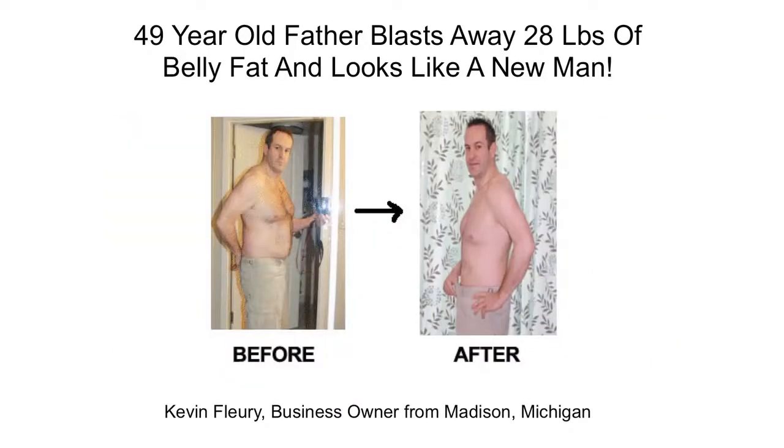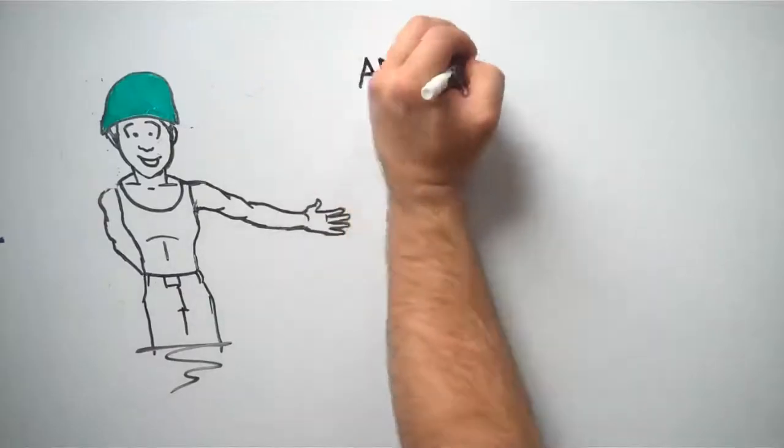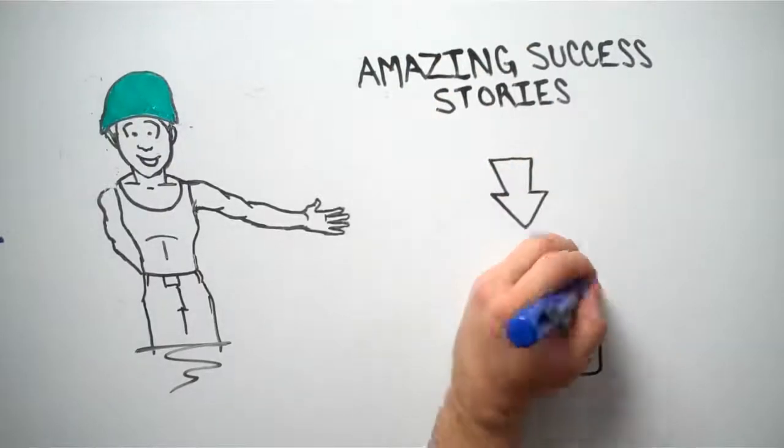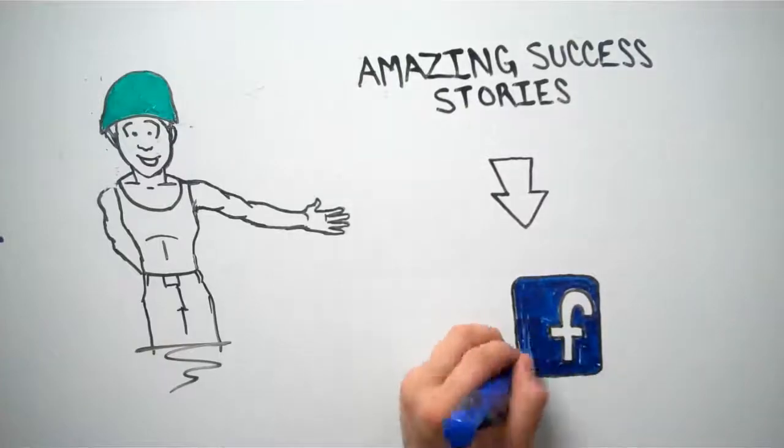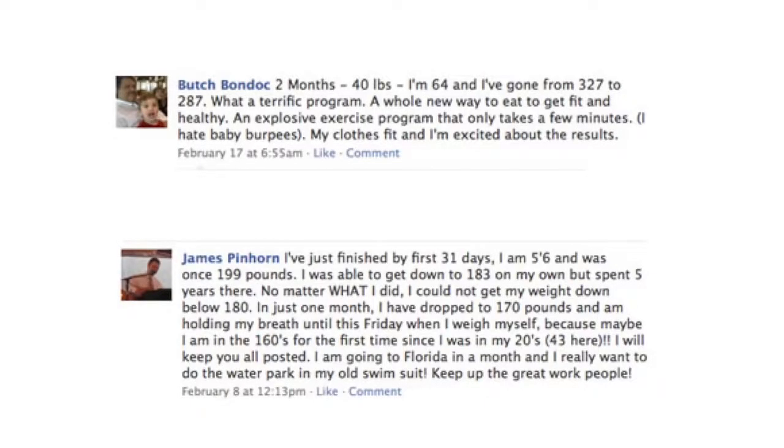And here's the last story I want to share with you. From Kevin Florey, a 49-year-old business owner in Michigan. Kevin was able to blast away 28 pounds of stubborn fat from his midsection in just a few short weeks. His old pants that used to hug his gut are now hanging off his waist. And along with these great pictures people are sending me, I want to share with you some of the amazing success stories I get posted on my Facebook page every day. We have Butch Bondock at the age of 64, who went from 327 pounds to 287 pounds on the program. That's a loss of 40 pounds. I personally emailed Butch a few times, and he says the biggest reward was knowing that he'll be around longer to see his grandkids grow up. James Pinhorn, who's 43 years old and was once 199 pounds, says he's almost down to 160 pounds now for the first time since he was in his 20s. His goal is to be in good enough shape to put his old swimsuit on for his next family vacation.